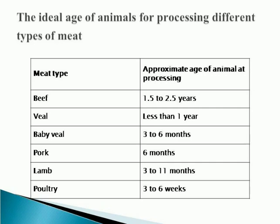Veal comes from a young calf. Pork can be processed for up to 6 months. Lamb is called lamb, and it also comes from young animals.